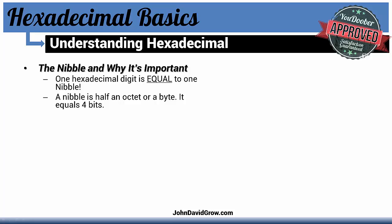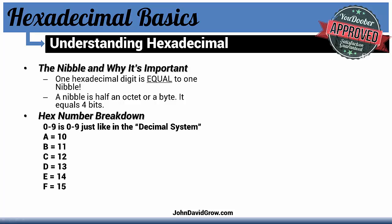The way the hexadecimal number system breaks down: you have 0 through 9, just like in the decimal system. But then you have A through F, and A through F equals specific values. A equals 10, B 11, C 12, D 13, E 14, and F 15. You should commit these to memory.